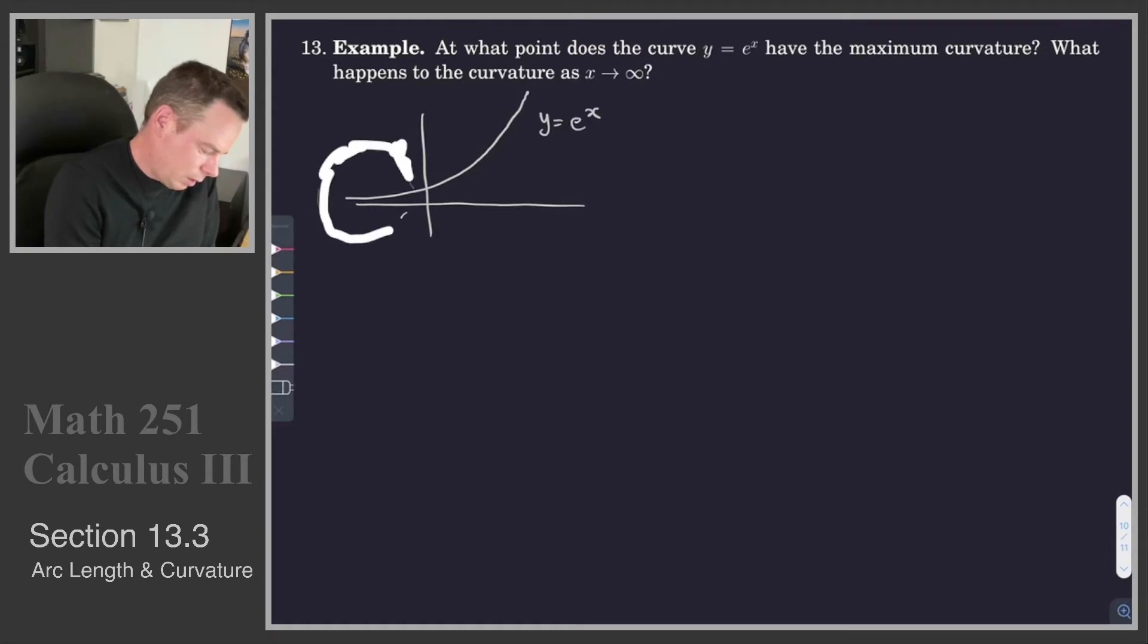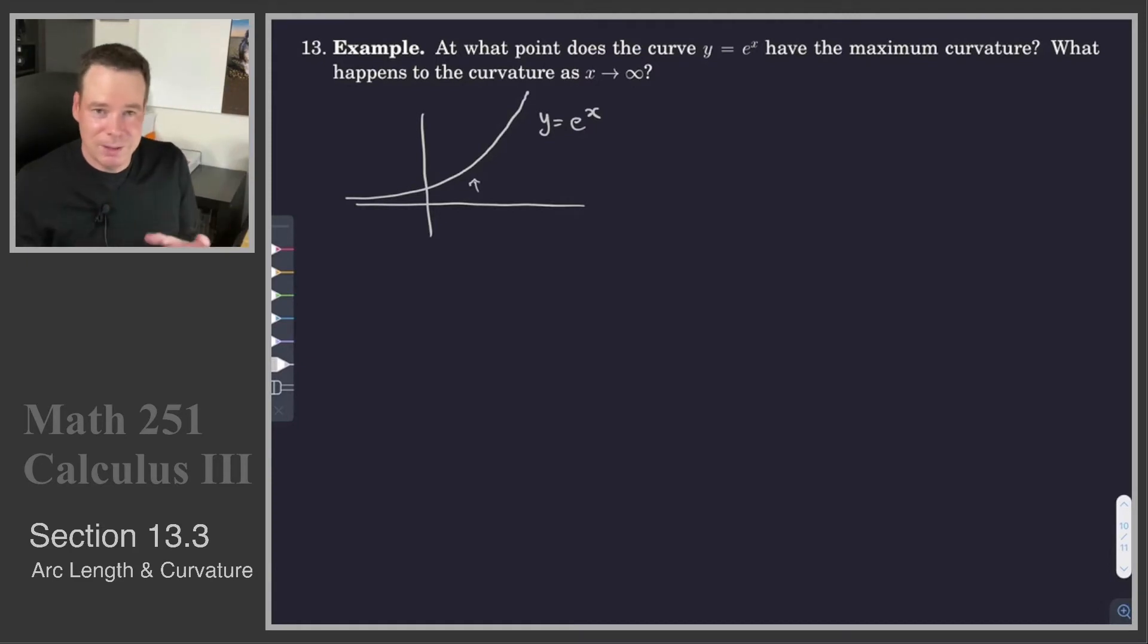So maybe the bends in those extremities are going to zero. The maximum bend looks like it's probably occurring somewhere in here. The maximum bend is, in some sense, where it's curving, where it's bending like a small circle, like a circle of small radius. And it looks like it's happening somewhere in there. So I'll put a little question mark. Somewhere in there, maybe the maximum's happening? Let's see if we can figure it out.